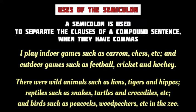Examples will clarify this rule better. In the first example, the first independent clause has commas: 'I play games such as carom, chess, etc.' The second independent clause also contains commas: 'I play outdoor games such as football, cricket, and hockey.' These two independent clauses are joined by the coordinating conjunction 'and,' but before the coordinating conjunction, we have to use the semicolon.